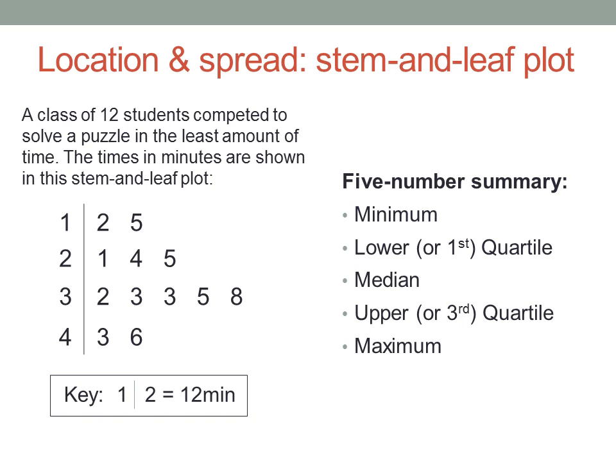We'll start with what's called a five-number summary, which is made up of the minimum and maximum values, the median and the lower and upper quartiles, also called the first and third quartiles.